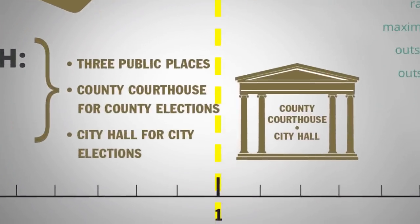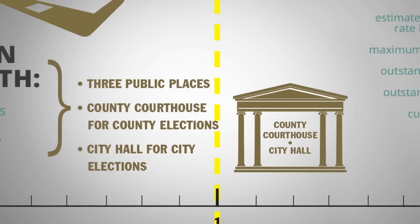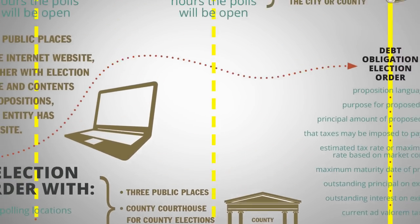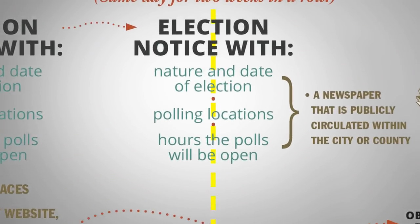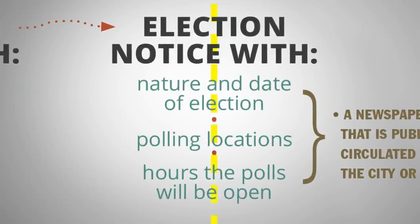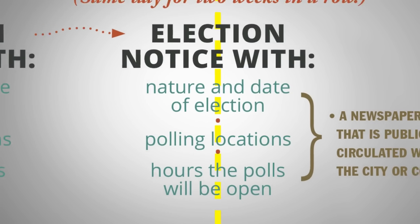For county elections, it also must be posted at the county courthouse. For city elections, it must be posted at City Hall. This election notice basically tells you the nature and date of the election, polling locations, and the hours polling locations will be open.